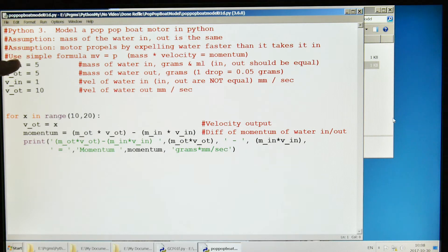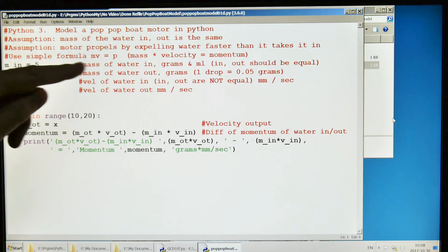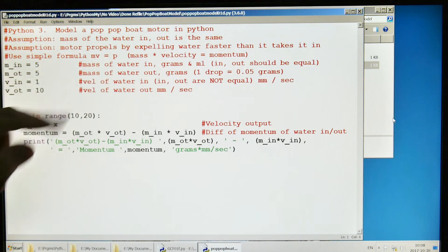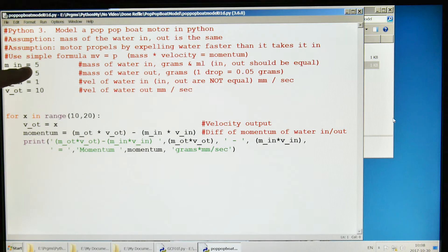If we use a simple high school formula from physics, mass times velocity equals the momentum. We can test to see if that might be correct. We're looking at the mass of the water in. We're going to say the in and the out water mass are the same, and it should be the same.